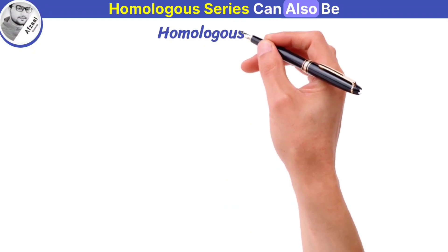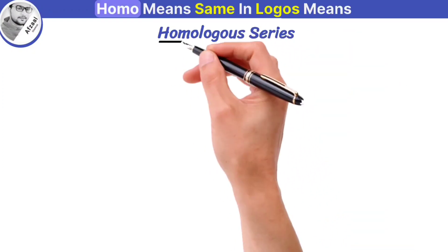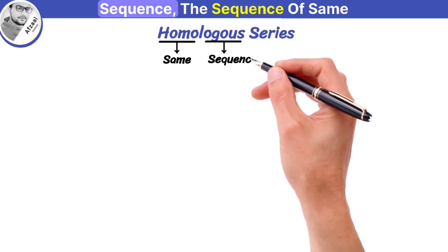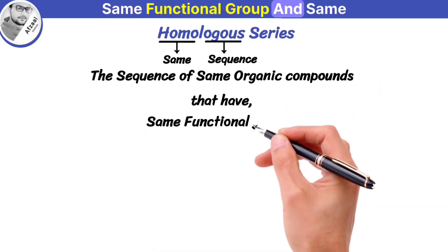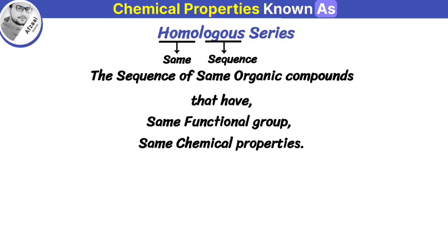Homologous series can also be defined in another way. Homo means same and logos means sequence. The sequence of same organic compounds that have the same functional group and same chemical properties is known as homologous series.